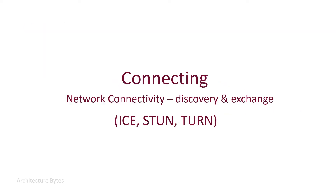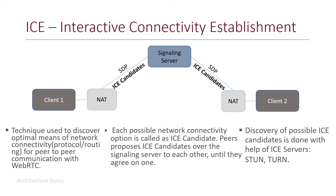In the connecting step, network connectivity is discovered and decided. ICE, or Interactive Connectivity Establishment, is a technique used to discover the optimal means of network connectivity — essentially the protocol and routing for peer-to-peer communication with WebRTC. Each possible network connectivity option is called an ICE candidate. Peers propose ICE candidates over the signalling server to each other until they agree on one. Discovery of possible ICE candidates is done with the help of ICE servers: STUN and TURN.